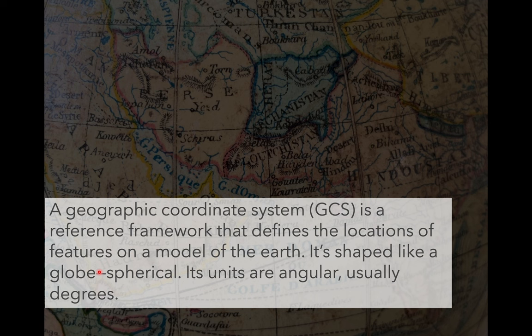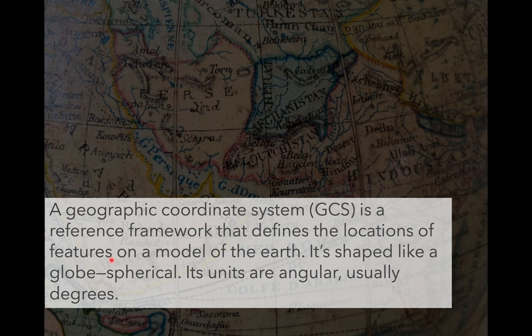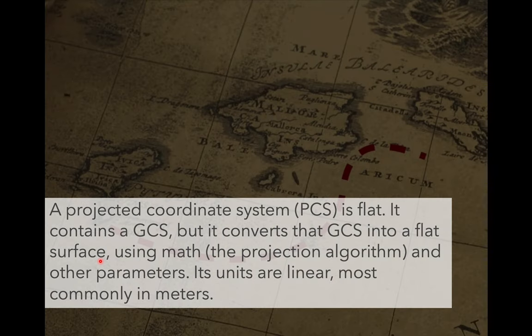Now that we've shifted our thinking to three-dimensional space versus two-dimensional space, we can talk about some terminology. When thinking about coordinate systems or how to reference points on the surface of the earth, what we most commonly use is a geographic coordinate system. This is a framework that allows us to define locations of features at an x and y coordinate on a model of the earth. These models are typically spherical or globe-shaped, the units are angular — usually degrees, minutes, seconds — and that's our basic geographic coordinate system that allows us to say where a point is on the earth.